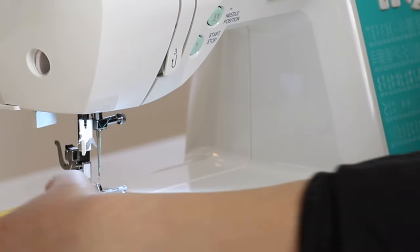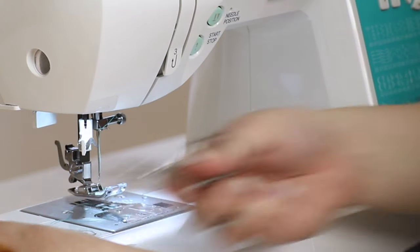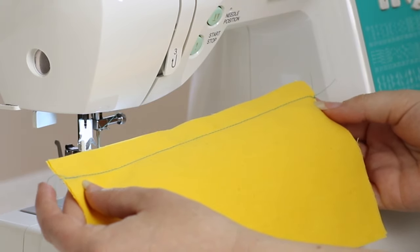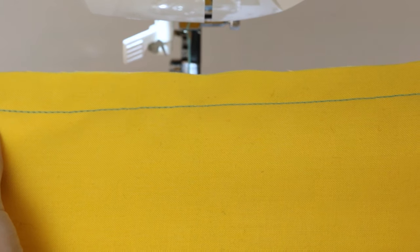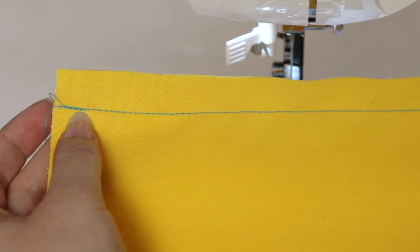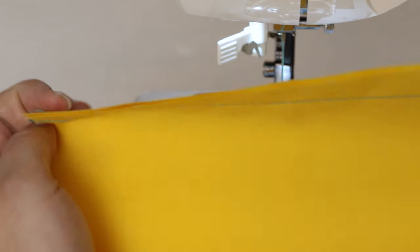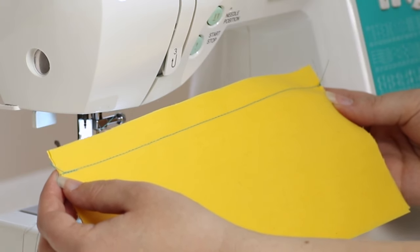Raise the presser foot and trim the threads. And here's our seam. We did reverse sewing at the beginning and end so that our stitches won't become unraveled. Now let's check out how to select a stitch.